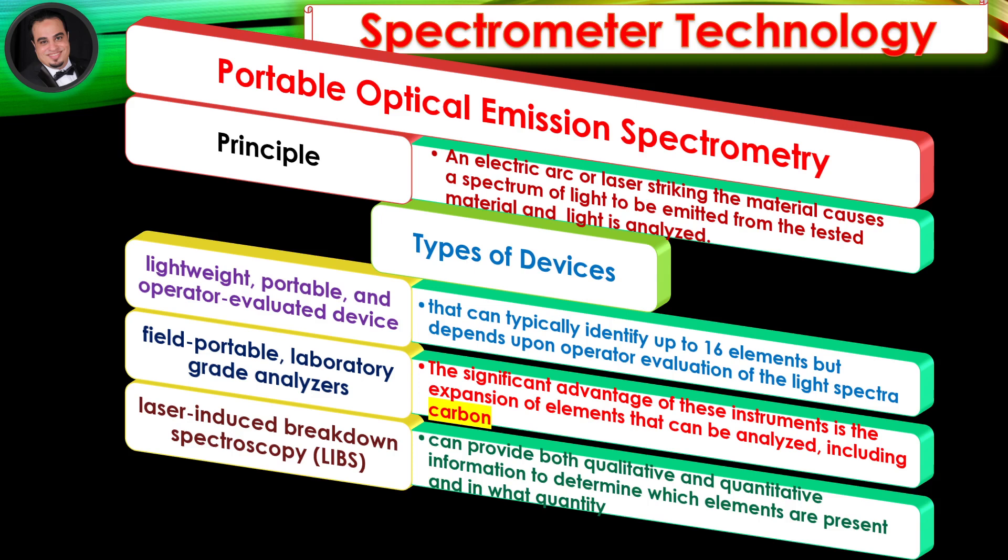Types of devices: Lightweight, portable, and operator-evaluated devices that can typically identify up to 16 elements, but depend upon operator evaluation of the light spectra. Field portable, laboratory-grade analyzers offer the significant advantage of expanding the elements that can be analyzed, including carbon.